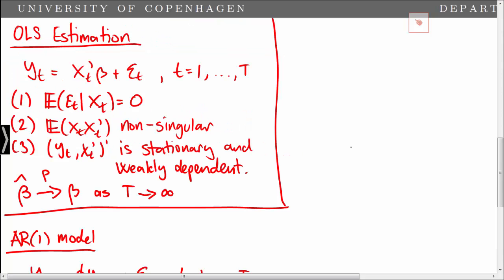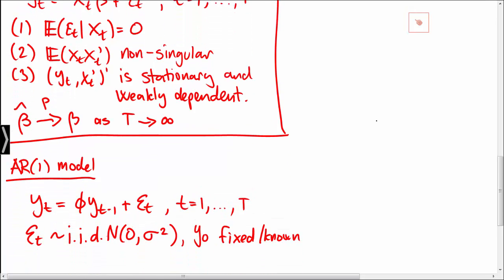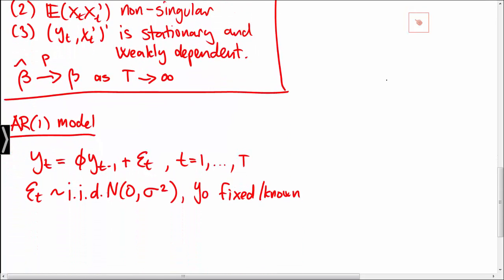Compared to the linear regression model, we simply have that our regressor xt is yt minus 1 and that beta is equal to phi.